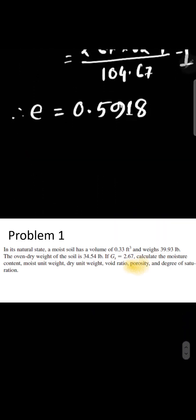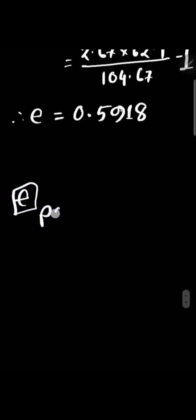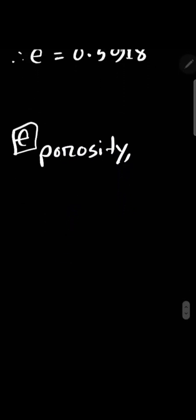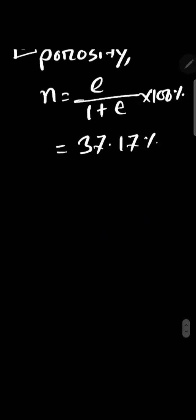We should also calculate the porosity. Porosity n equals void ratio divided by 1 plus void ratio, and it will be 37.17%.